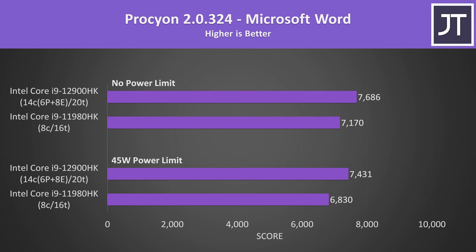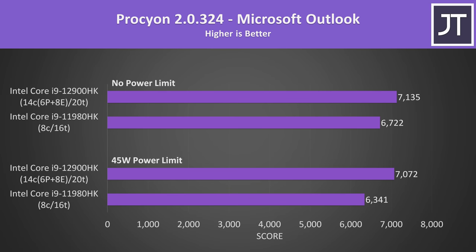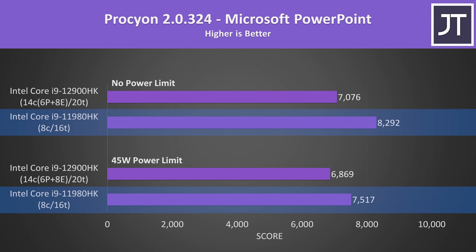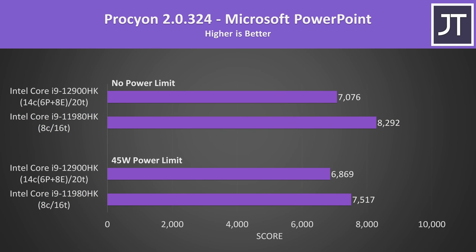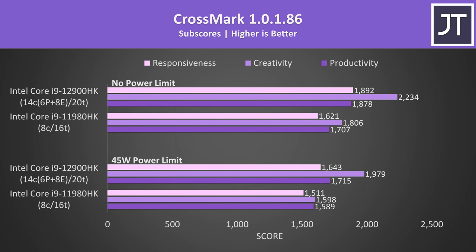Now for some Microsoft Office tasks. These tests had some of the smallest differences out of all applications tested, and for some reason PowerPoint was actually performing better on 11th gen, which I triple checked. Perhaps that particular software needs an update to be optimized for 12th gen's P and E core design. This was the only test where 11th gen was scoring better than 12th gen. Crossmark is a cross-platform benchmark that aims to measure overall system performance and responsiveness. The differences were small here too, with a 15-17% boost with 12th gen. It seems like the largest improvement out of these three measured categories is in creativity, which aligns with what we saw in the video editing tests earlier.